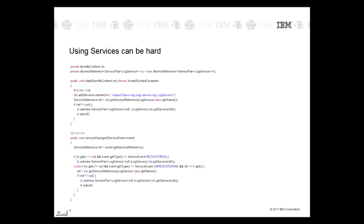The problem with services is that using them via the OSGi API can be quite difficult. In this example there's quite a lot of code just to get hold of and track the log service, and we're not even talking about the code you would need to write to perform the business logic. There's quite a lot of boilerplate here, and Blueprint can really help you.